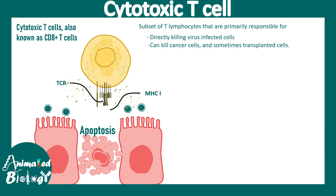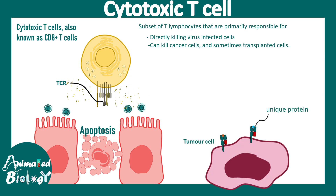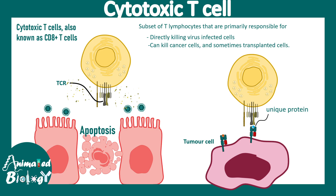This same approach applies to cancer cells. Any normal nucleated cell displays self-peptides on class 1 MHC to signal that everything is fine, but when a tumor cell mistakenly displays a unique protein — a tumor antigen — that is not present in normal cells, CD8 positive T cells recognize it. The cytotoxic CD8 positive T cell then secretes granules containing enzymes to kill those tumor cells.